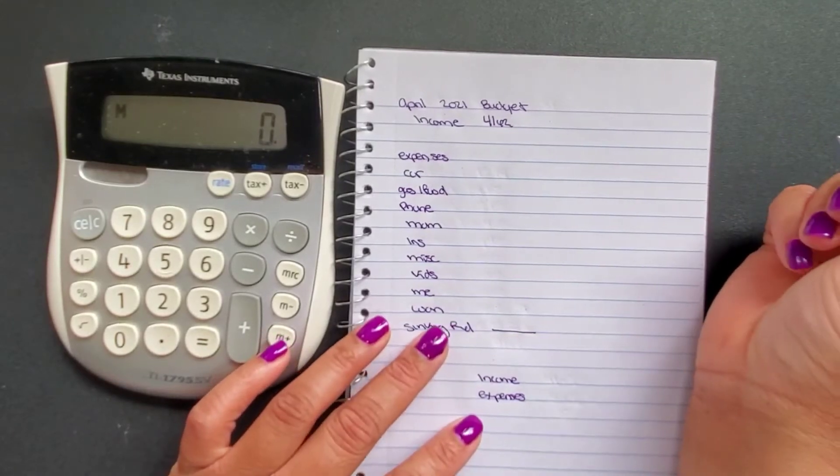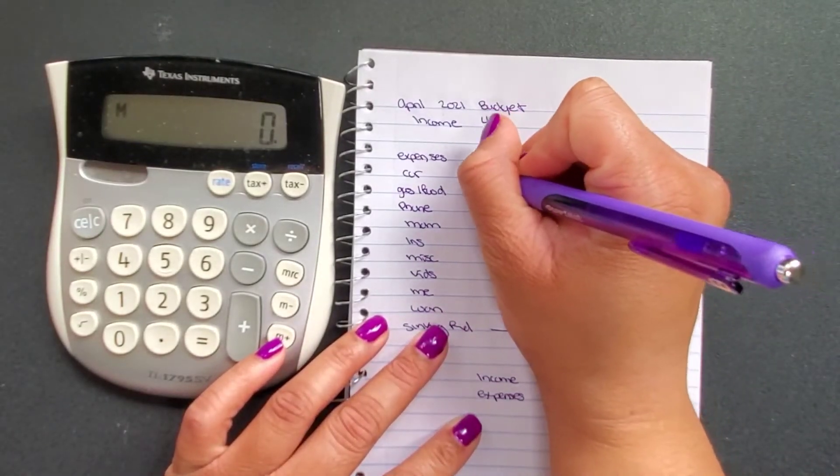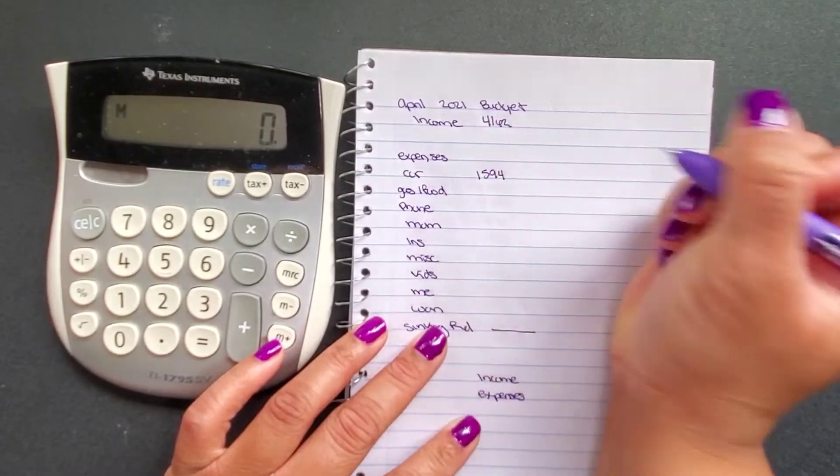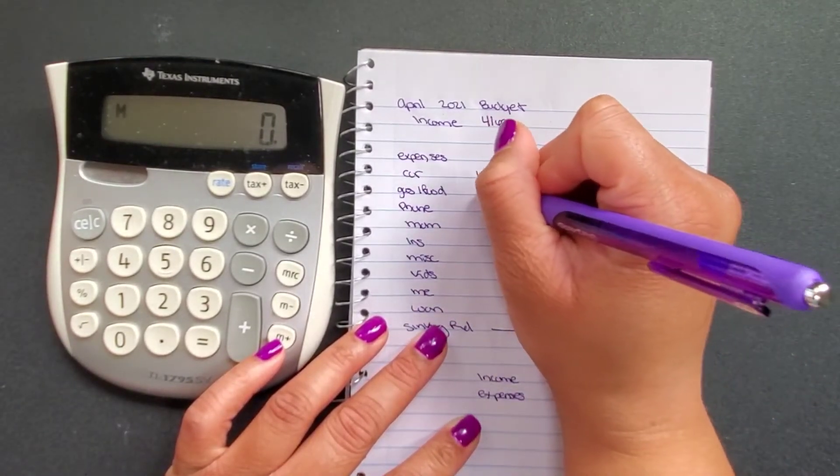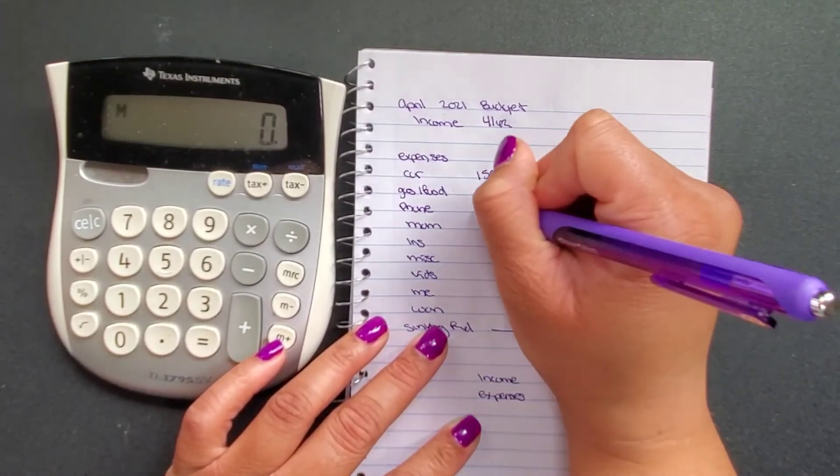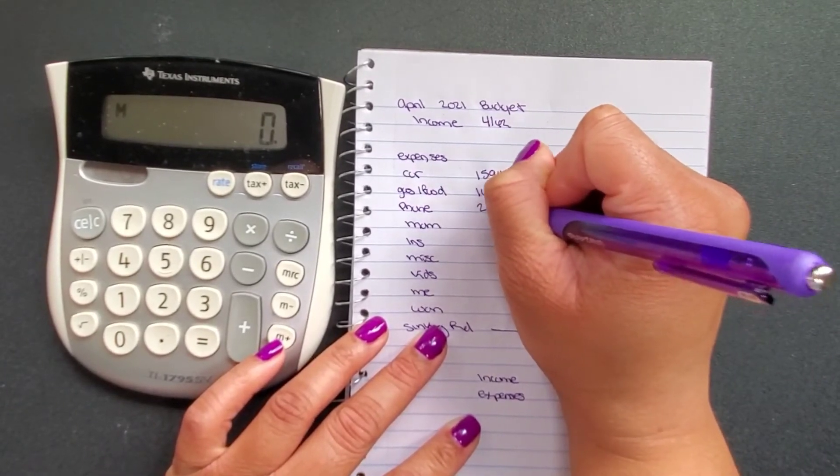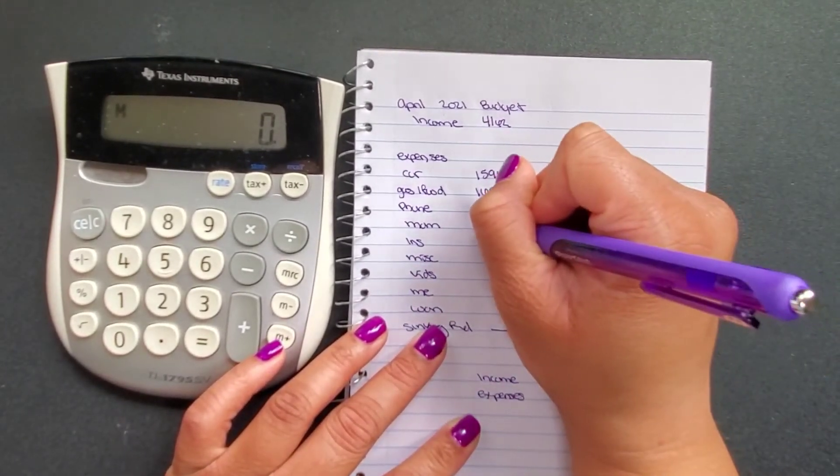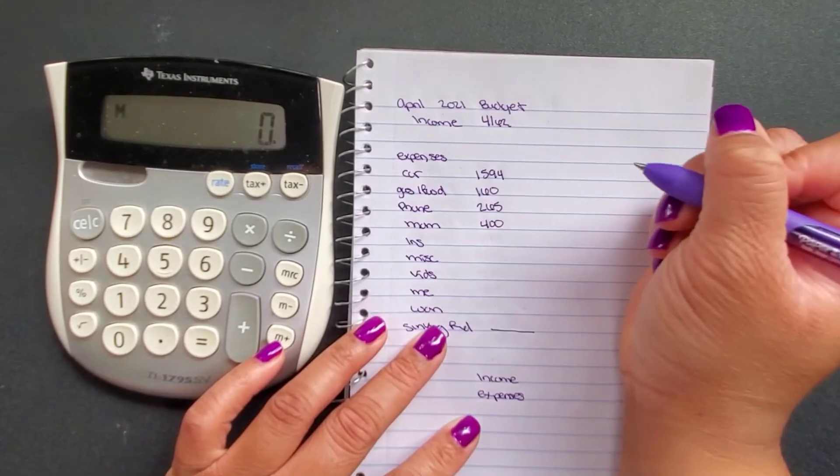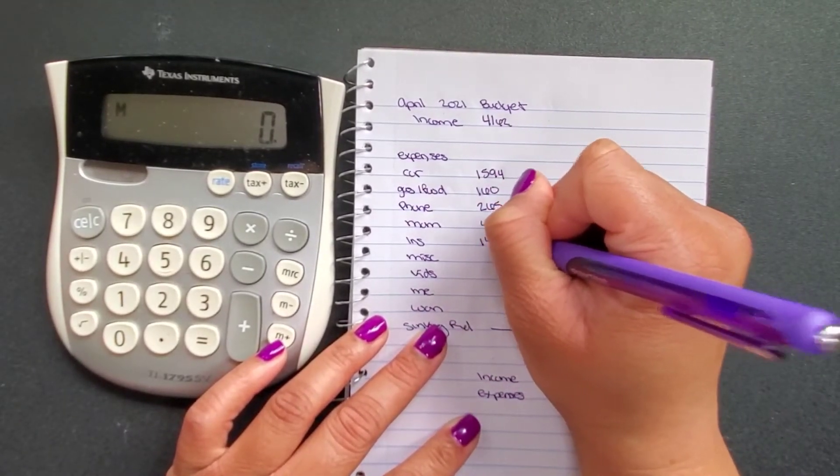So for my car, that is going to be $1,594. Gas and food is $160. $265 for my phone, $400 for my mom, $148 for my insurance.